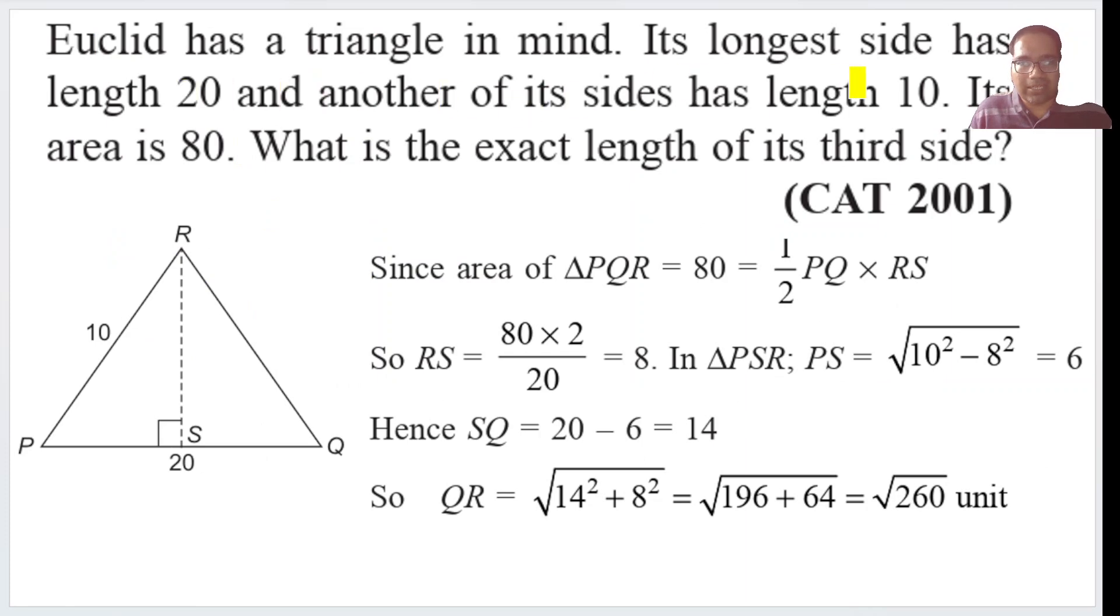Let's look at this. Euclid has a triangle in mind. Its longest side has length 20, and another of its sides has length 10. The area is given. What is the exact length of the third side? So we are given the longest side, let's take it as PQ which is 20, and another side which is 10 which is already given.